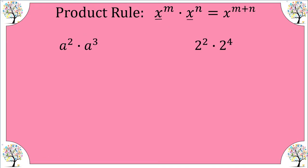Our first problem: a squared times a to the third. Let's expand this to see what's really going on. A squared means we're multiplying two factors of a, and then we're multiplying another three factors of a. So altogether, we have a to the fifth. The rule says simply add exponents when multiplying, and this is why.